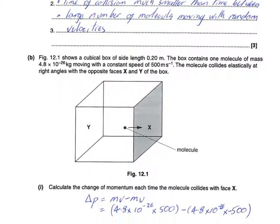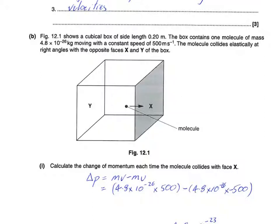Part B takes the ideas we looked at when we developed pv equals one-third nmc squared bar and applies them with specific numbers for a specific molecule. We start with a cubic box of side length 0.2 meters containing one molecule moving at constant speed 500 m/s, colliding elastically at right angles with opposite faces X and Y.